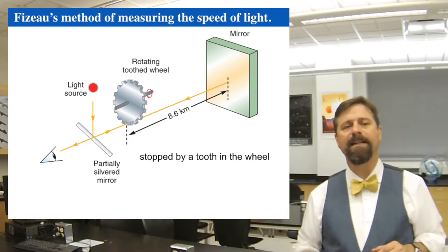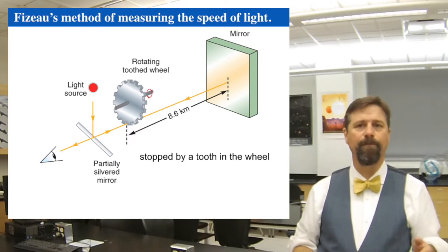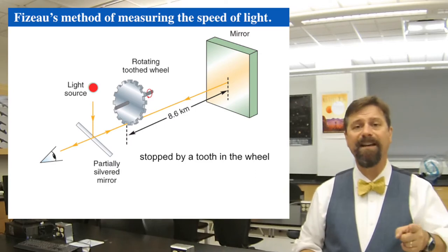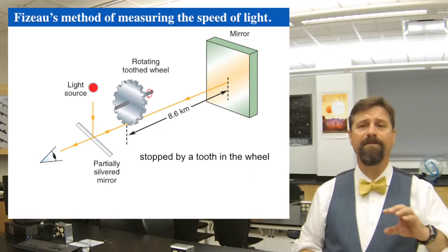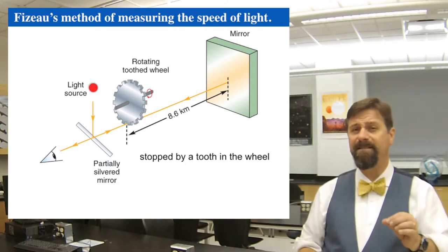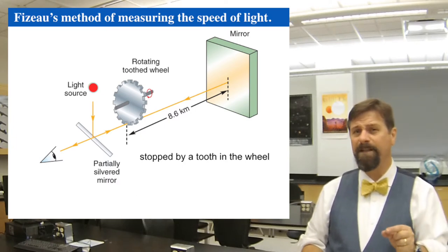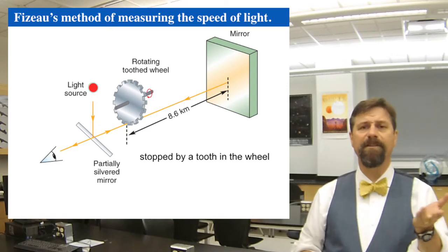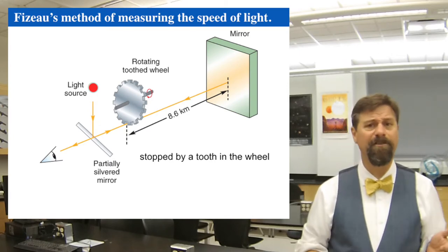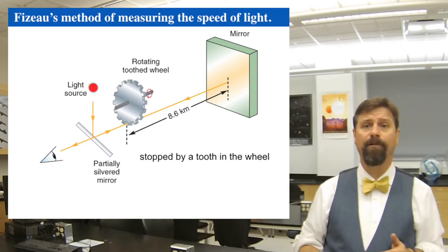That pulsed beam had to sync with the rotating wheel or it would get blocked. Either the light was blocked or it went through. The speed of light was determined by how fast the gear was rotating, the length of space between the teeth, and how long it took for light to travel down and back without distortion or a blurred view. That's one way of determining it: how fast the wheel rotates and the size of the gaps.